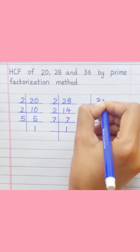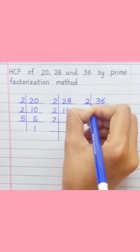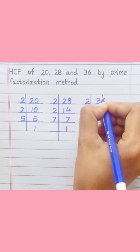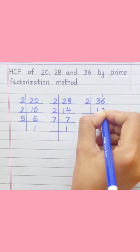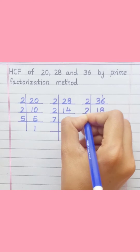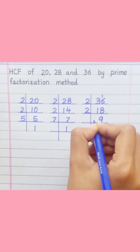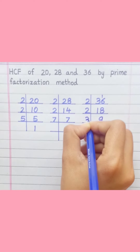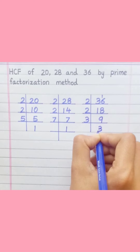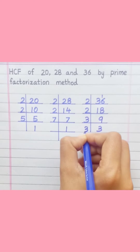36: 2 ones are 2, 2 eights are 16, 2 nines are 18, 3 threes are 9, 3 ones are 3. So the prime factorization of 36 is 2 × 2 × 3 × 3.